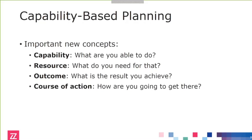That's resulted in four new concepts added to the language that really help you address more strategic planning issues. First of all, there's capability — a capability is what you can do as an organization, what you're able to do. It's something you may be able to do right now, or it could also be something you want to be able to do in the future, and that's of course what you want to do with capability-based planning.